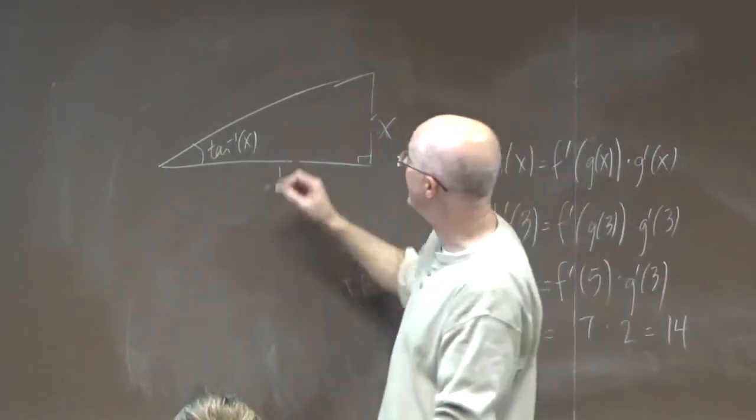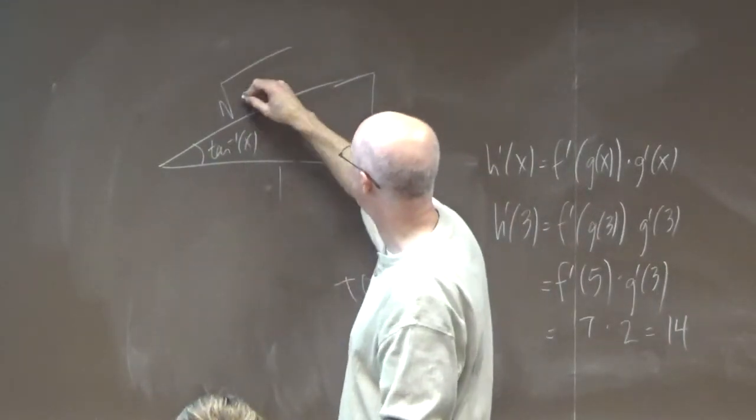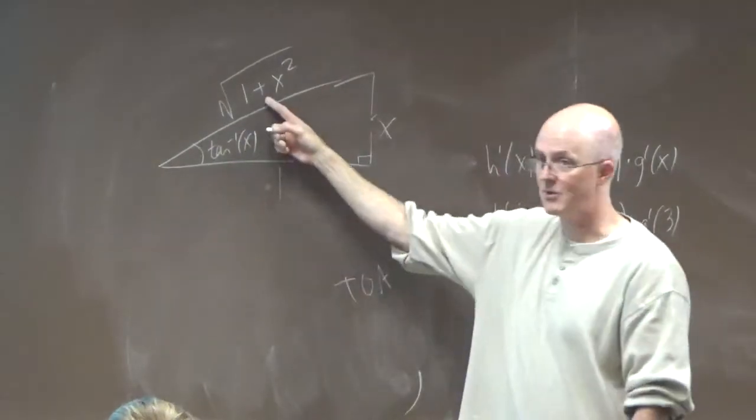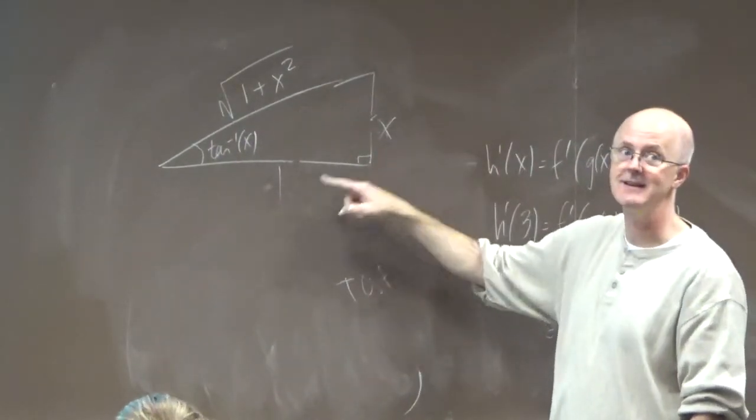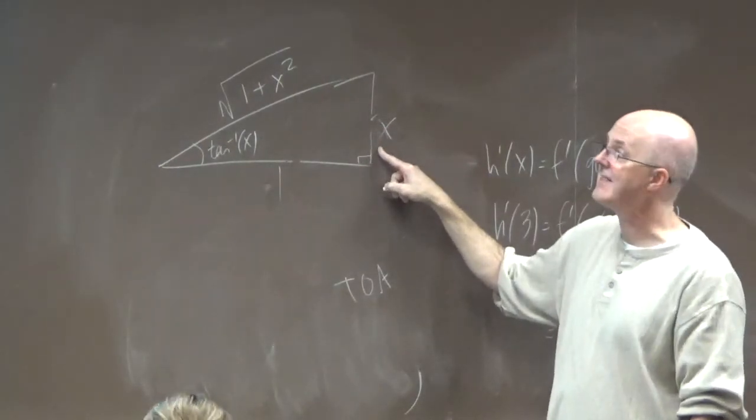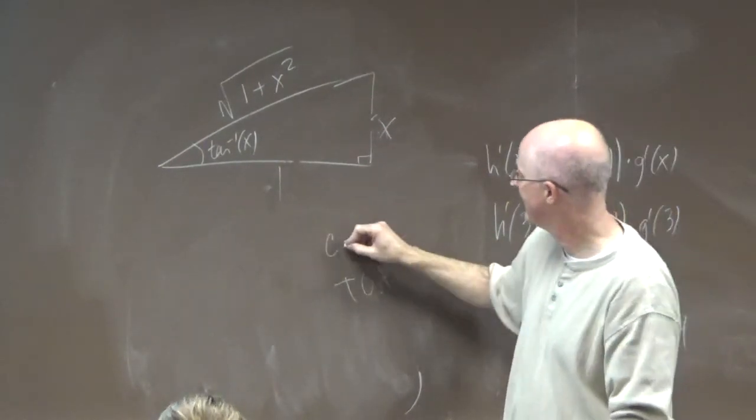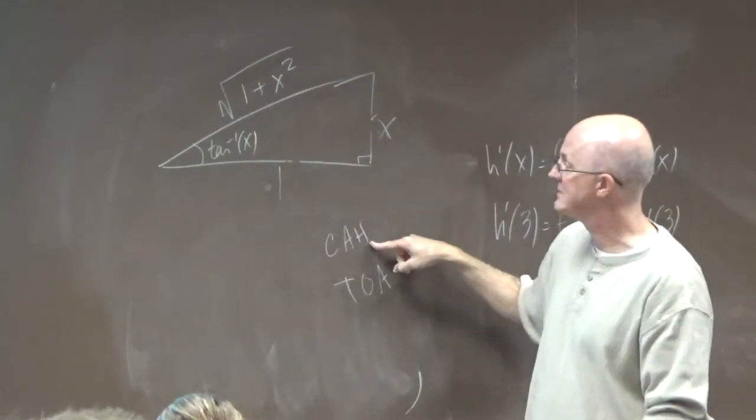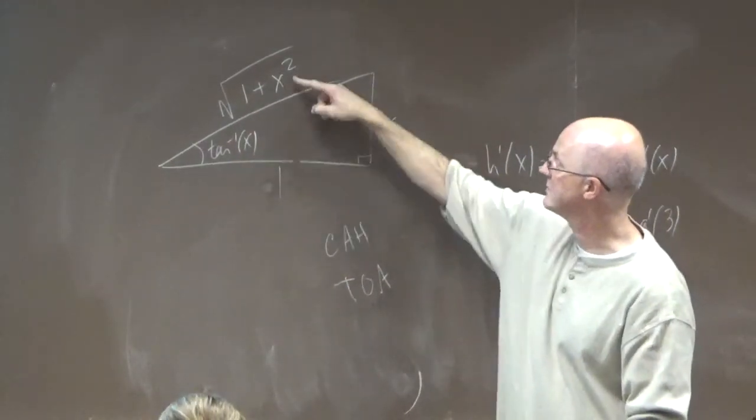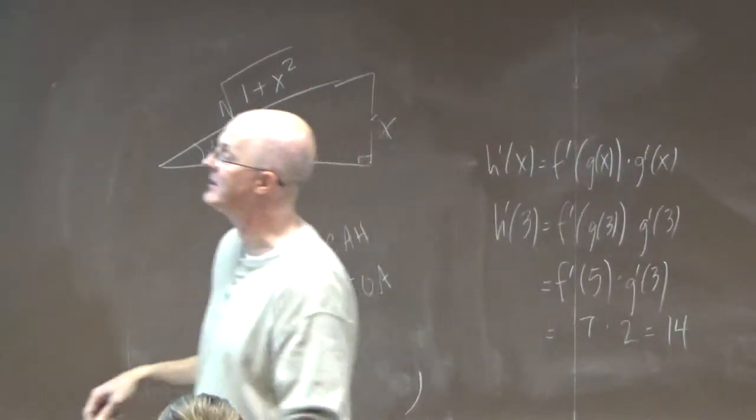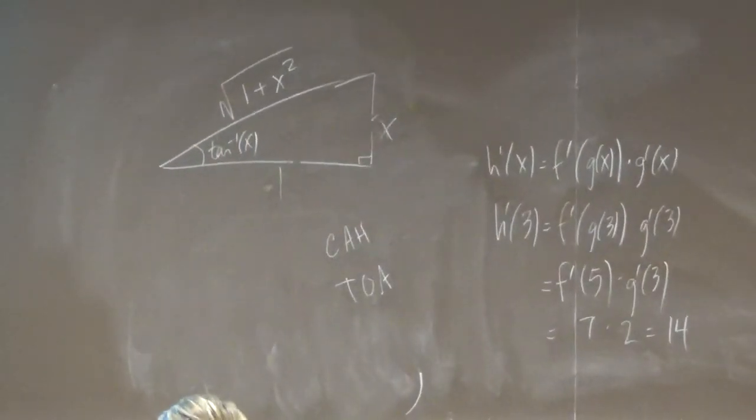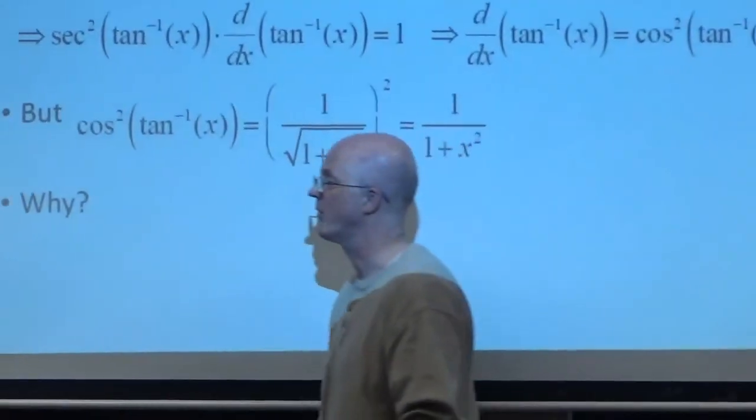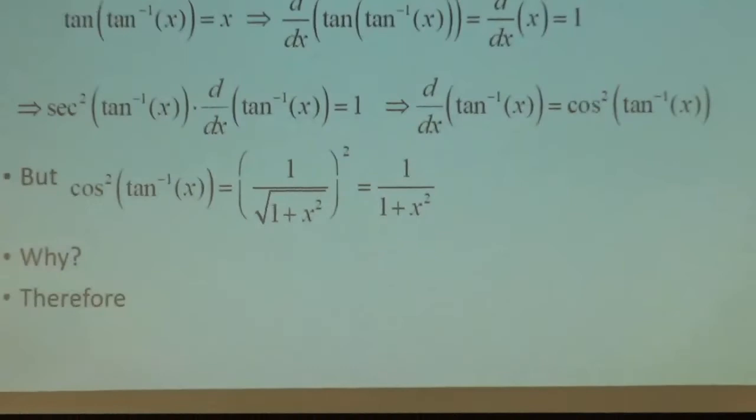By the Pythagorean theorem, this side's got to have length square root of 1 plus x squared. Because when you square that, you've got to get the sum of the squares of these things. And the cosine of an angle, SOH CAH TOA, is adjacent over hypotenuse. Adjacent over hypotenuse, 1 over square root of 1 plus x squared. That's exactly what you see in here. Then I have to square that to get this. So that's the more common form of the derivative of the inverse tangent.